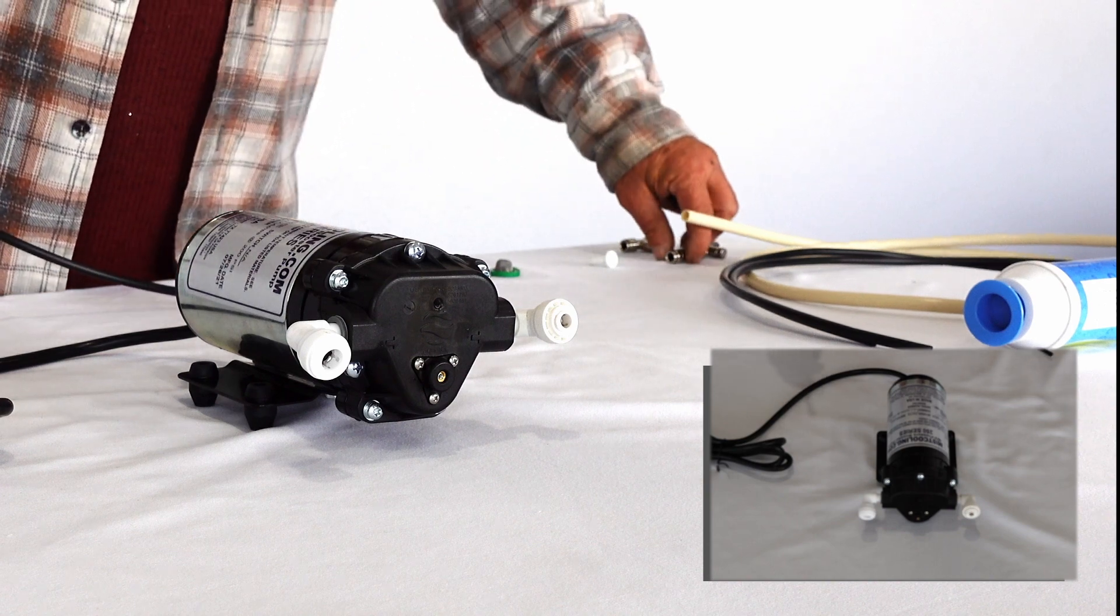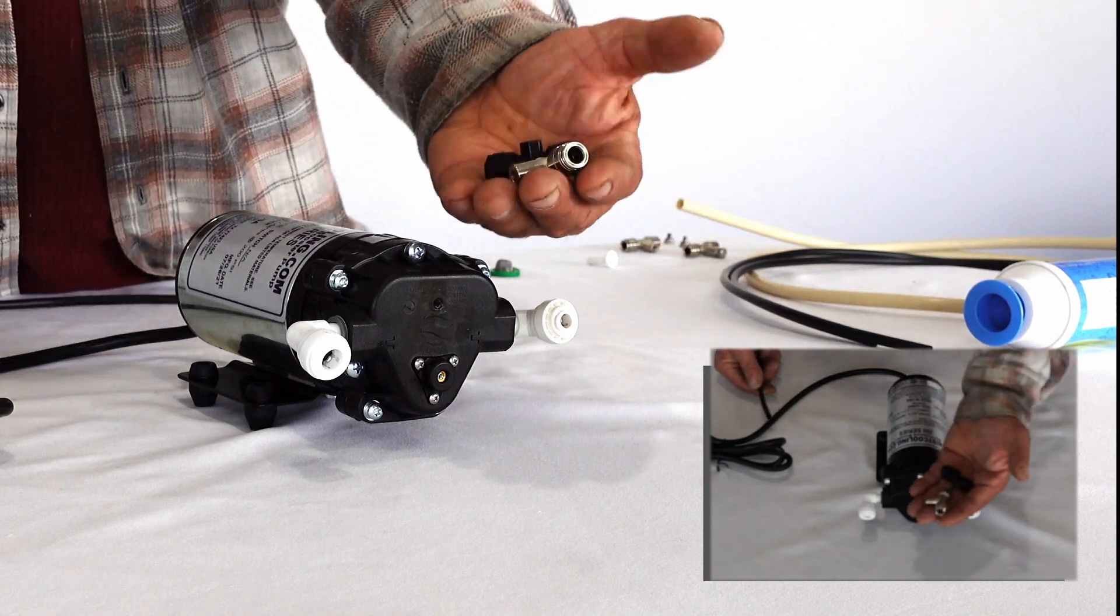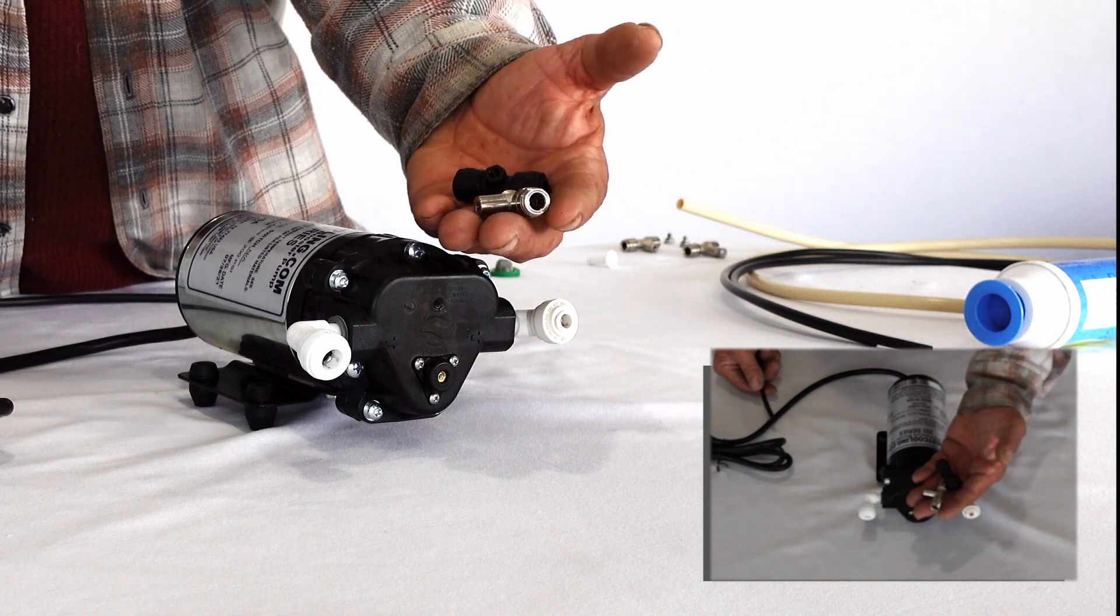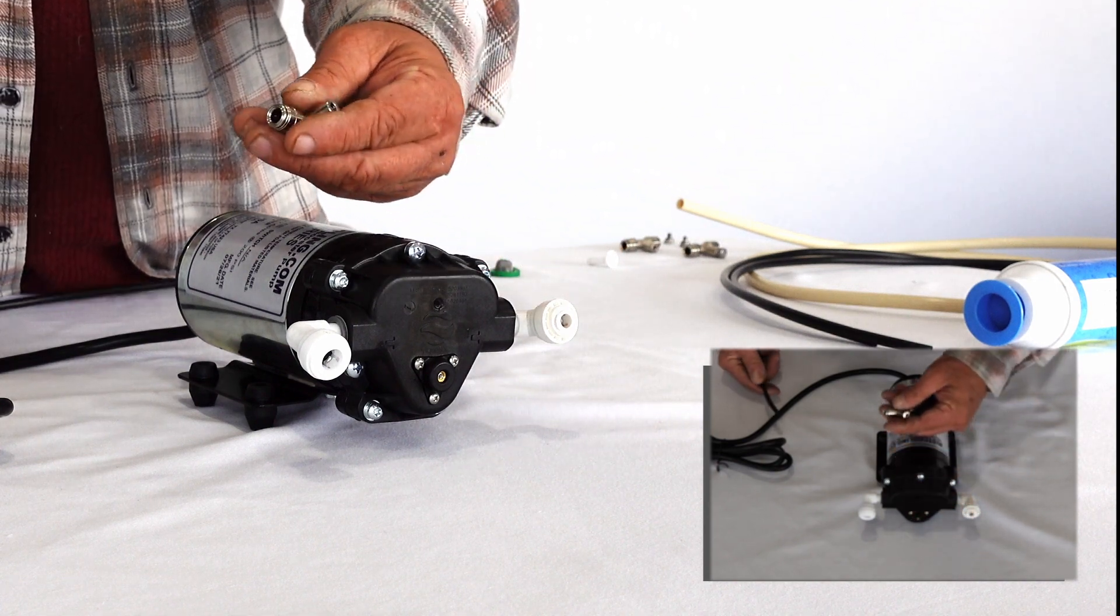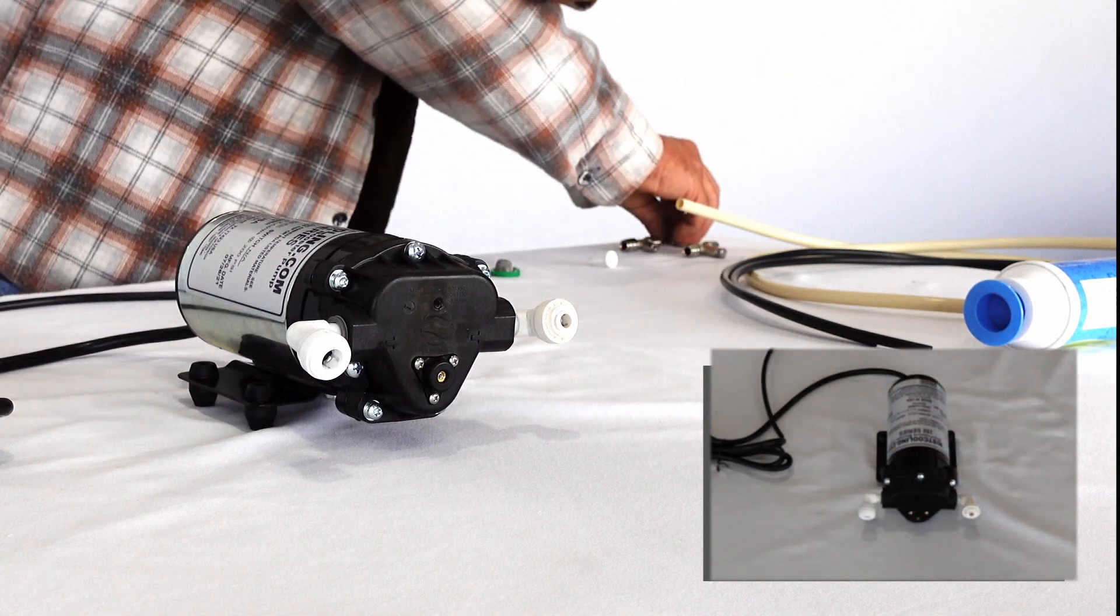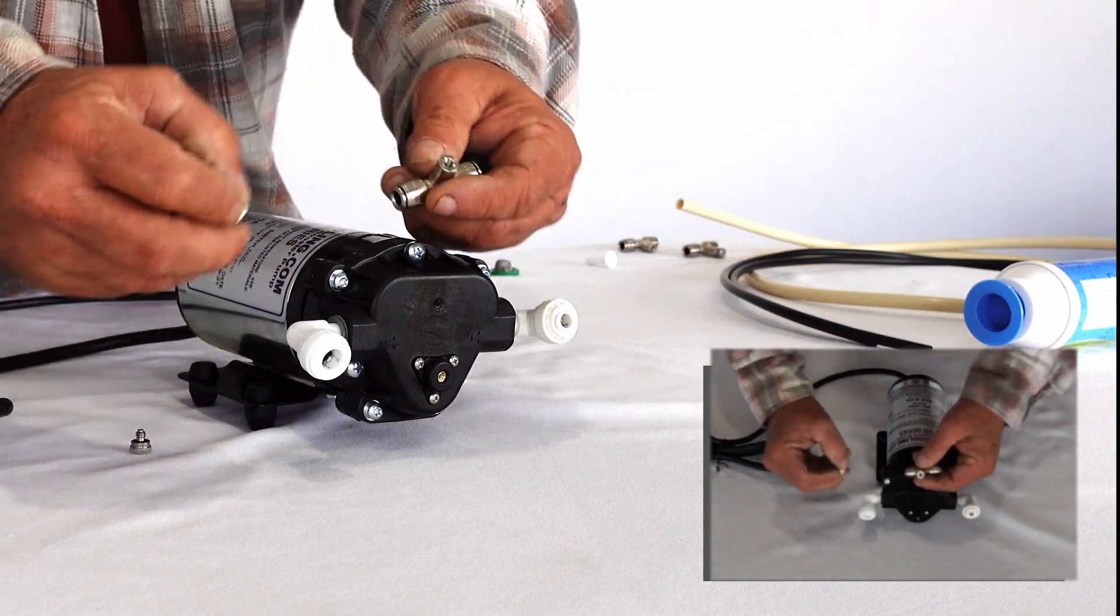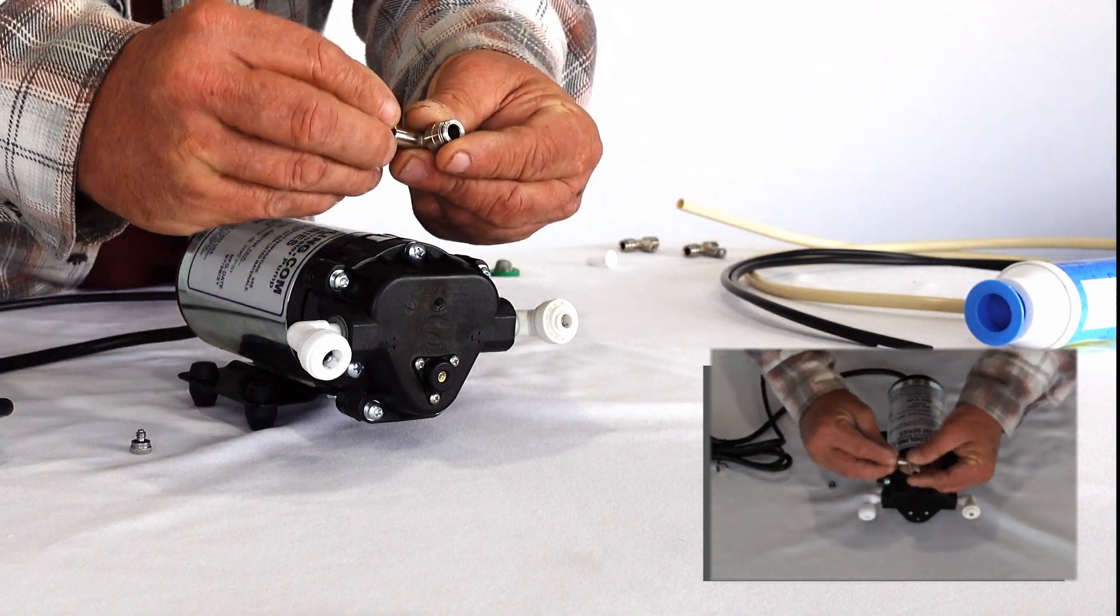Now whether you have the metal or the plastic, they both work the same principle. You will take your nozzle, screw it into your misting tee.